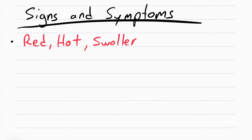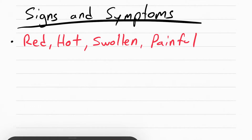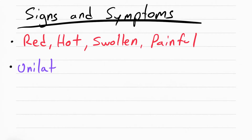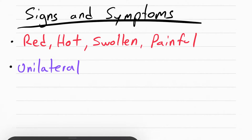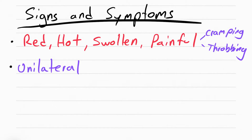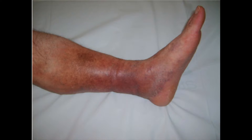What the patient's going to experience is a red, hot, swollen, and painful leg. This usually only happens on one side and the patient's going to describe the pain as cramping or throbbing. There may also be some discoloration of the leg, especially if they have a history of DVTs, because the red blood cells start breaking down in that area, causing changes in the pigmentation.